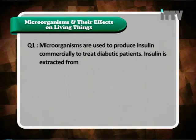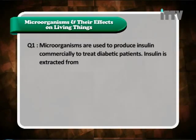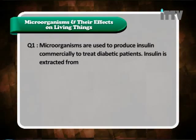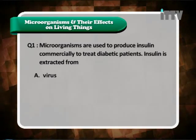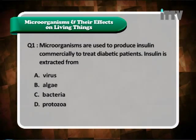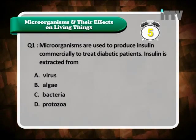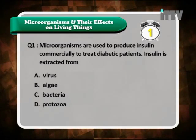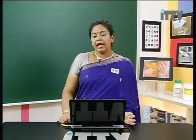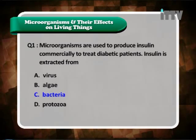Question 1: Microorganisms are used to produce insulin commercially to treat diabetic patients. Insulin is extracted from — A. Virus, B. Algae, C. Bacteria, D. Protozoa. Insulin is actually created by bacteria in particular. If you look back into your notes, the answer is bacteria. So the answer for this question is C.